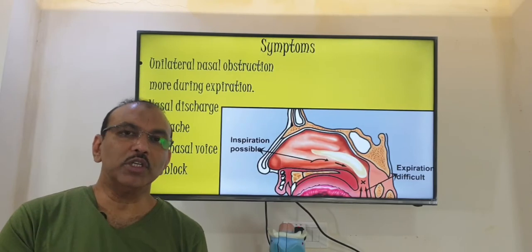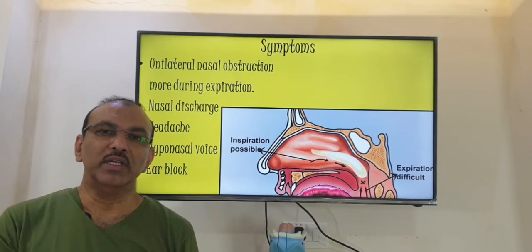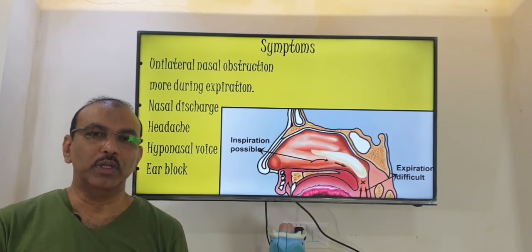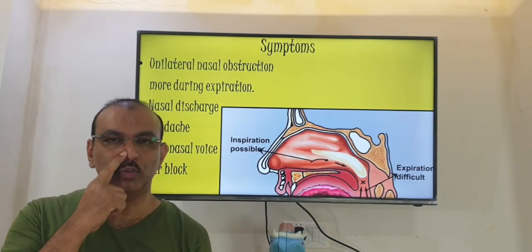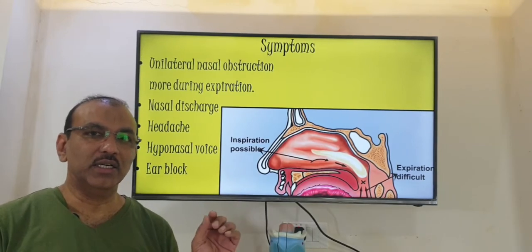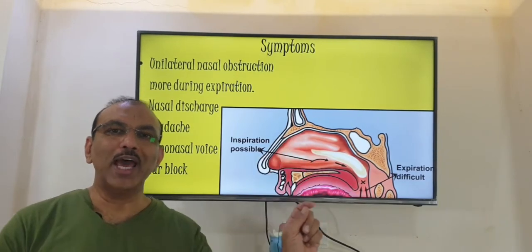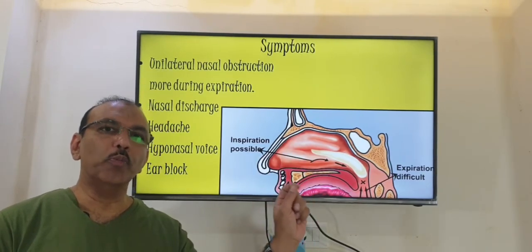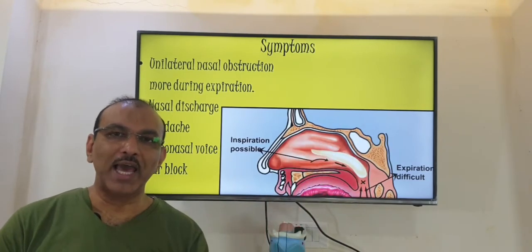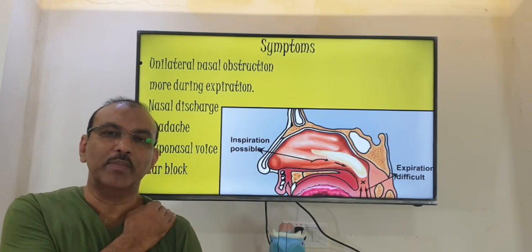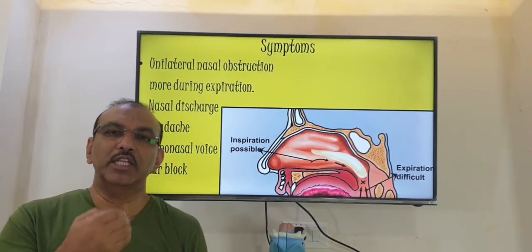Sometimes you can see mucoid discharge on that particular side. And if there is infection, there will be pain on that particular side and headache also. And if the nose is completely blocked, there will be a change of voice also. In case the polyp reaches up to the choana and is protruding down to the oral cavity, it blocks the opening of a small tube called the Eustachian tube, which connects between the nasopharynx and the ear. This patient then starts getting ear-related complaints also, like ear pain, collection of fluid behind the eardrum, and ear infection.